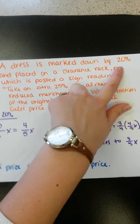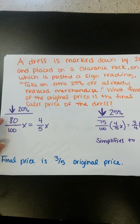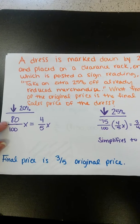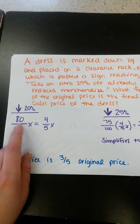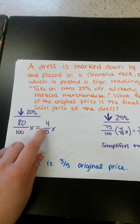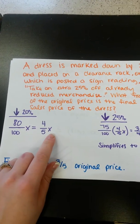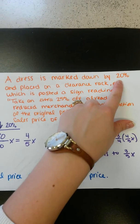So if the dress is marked down by 20%, then that means that we're going to pay 80% of the price. So 80 over 100 of this X original price. So if you reduce that, it reduces down to 4 fifths of the original price. That's if it's marked down by 20.